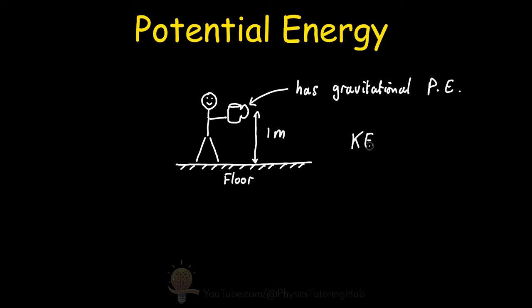The formula for kinetic energy is one half times the mass of the object times the velocity of the object squared. Now if you hold this coffee cup still above the ground, the cup's kinetic energy in this situation is zero — it doesn't have any kinetic energy. But the cup does have gravitational potential energy. To convert this gravitational potential energy into kinetic energy, you would drop the cup.